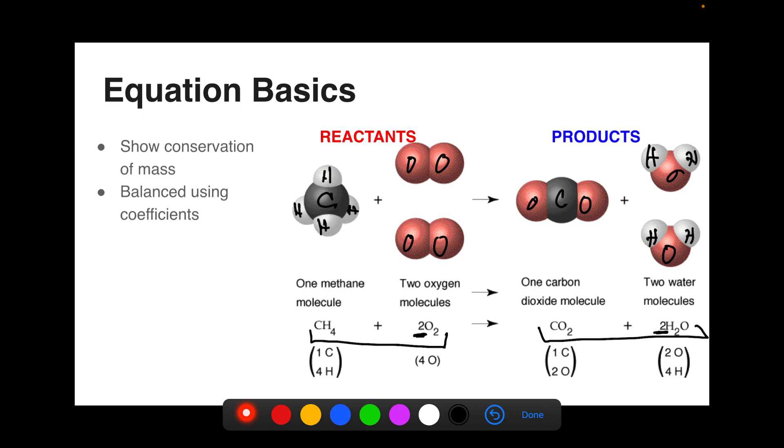We balance the equation using coefficients in order to maintain that conservation of mass. So this reaction is telling us that one mole of CH4 plus two moles of oxygen gas will yield one mole of carbon dioxide and two moles of water.